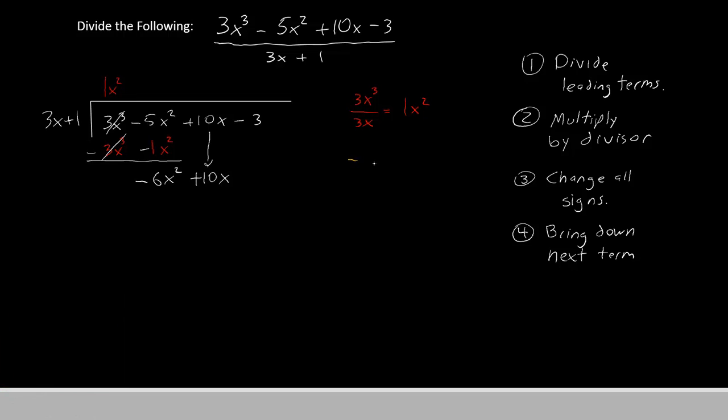We have negative 6x squared divided by the leading term of the divisor, 3x. Negative 6 divided by 3 is negative 2, and x squared divided by x is x to the first power. That will be the second piece of our answer.